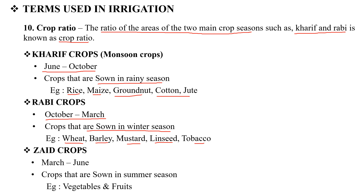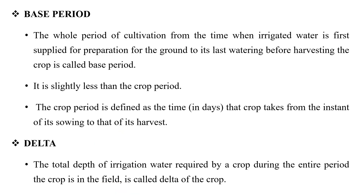The next crop season is the Zaid or summer crop, from March to June. These are summer season crops such as vegetables and fruits. The base period is the total period of cultivation from the time when irrigated water is first applied for the preparation of the ground to the last watering before harvesting the crop.